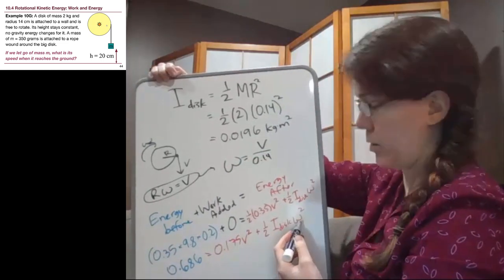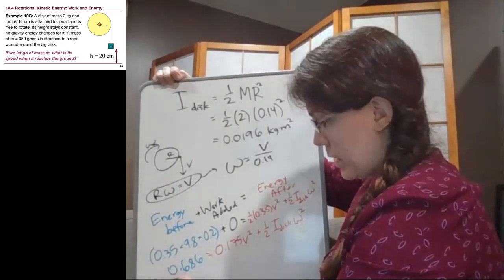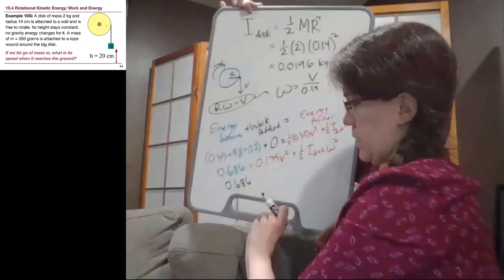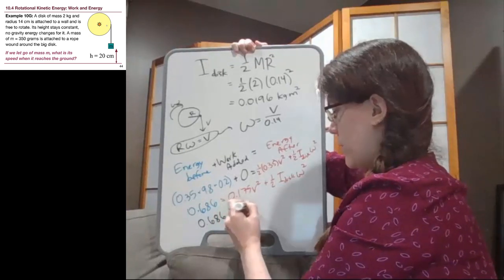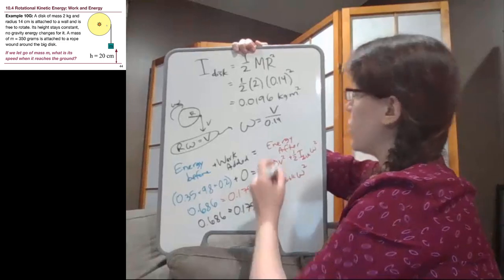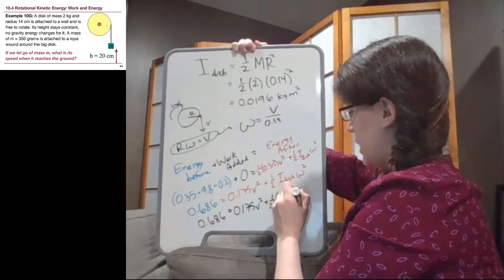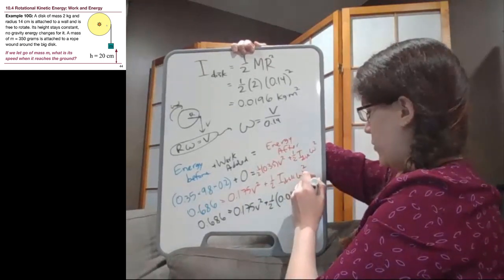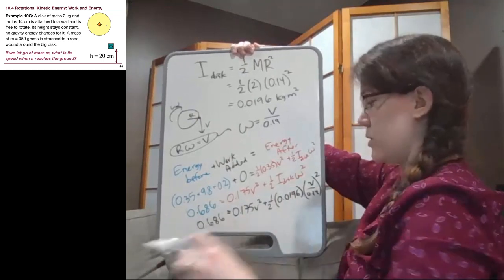So that can go in down here. So what we have at the bottom at this point is 0.686 equals 0.175 v squared plus one half the I is this 0.0196. And instead of omega, we're writing v over 0.14, but that term gets squared.